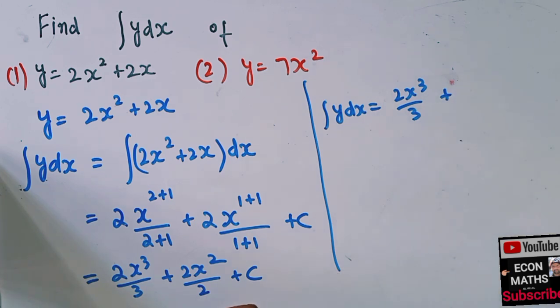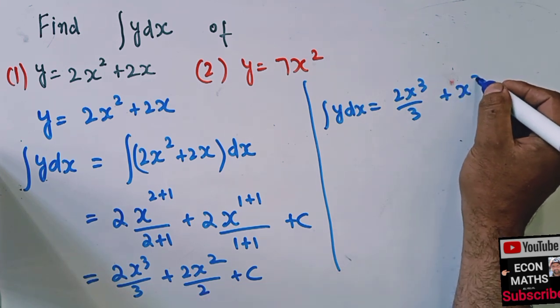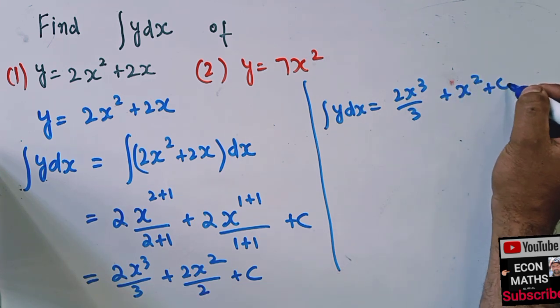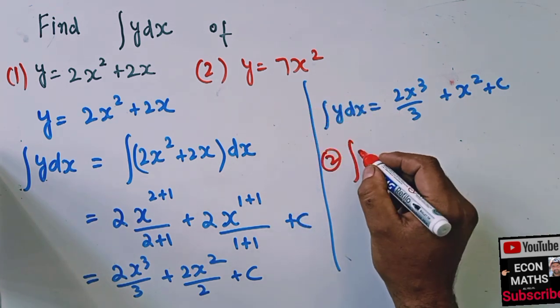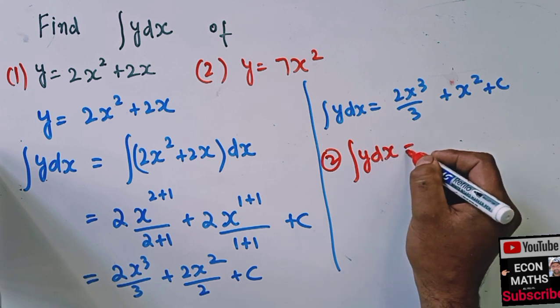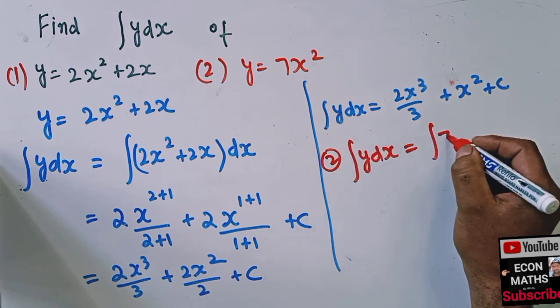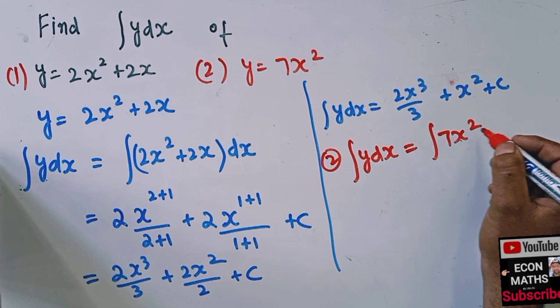And similarly for the second question, the integral of y dx means the integral of 7x squared with respect to dx will be equal to 7 is constant, the integral of x squared will be x raised to the power 2 plus 1 divided by 2 plus 1 plus we add the constant of integration.